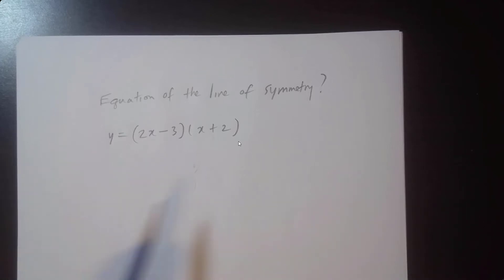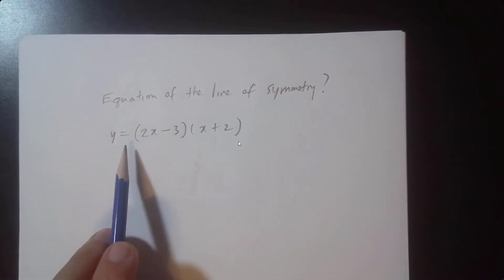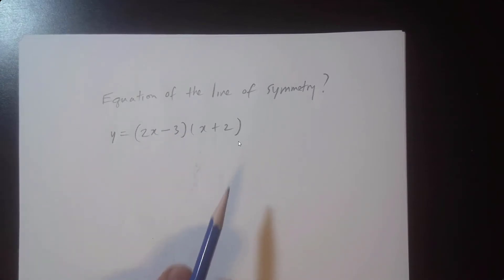Let's find the equation of the line of symmetry of this quadratic. If you expand this out, it's going to be x squared, so it's definitely going to be a happy face or a sad face.